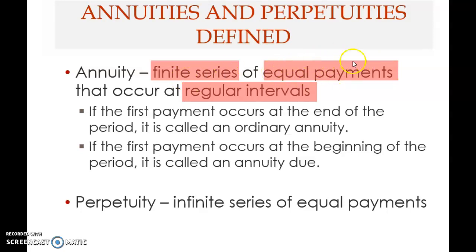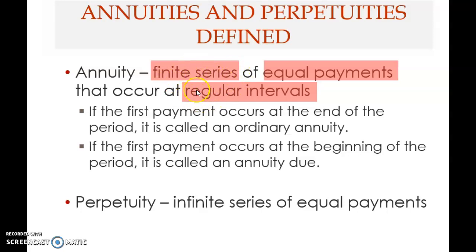So there are three things that are fixed: first, equal payment; second, payments occur at regular fixed time intervals; and third, the payment is fixed for a fixed period of time. When these three features are present, it's called an annuity.